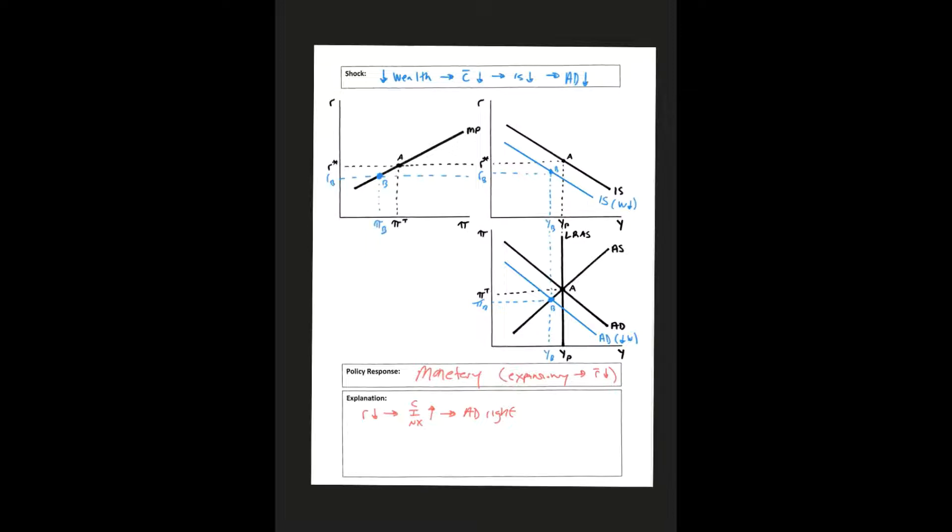I know a decrease in R bar is going to move my monetary policy curve down. So let's go ahead and draw that. We'll call this MP prime.